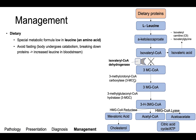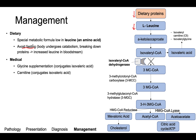Management is primarily dietary: a special metabolic formula low in leucine is used, since leucine is the precursor to isovaleryl-CoA, which is converted by the defective enzyme. You want to decrease dietary leucine and overall protein intake — not eliminate it completely, just reduce it. Fasting should be avoided to prevent the body from breaking down its own proteins and releasing leucine into the bloodstream. For medical management, glycine and carnitine can be given to help conjugate isovaleric acid and promote its excretion.